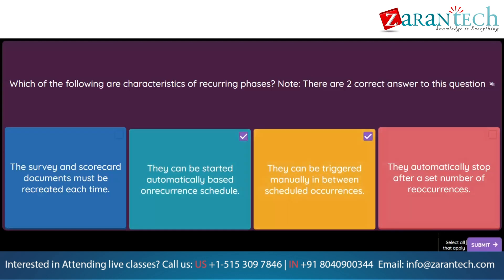Question. Which actions are available to decision makers when all assessments for a control are approved? Note, there are two correct answers. Option 1: Mark the control as effective or ineffective. Option 2: Correct erroneous information in the assessments. Option 3: Create issues related to the control. Option 4: Assign an overall grade for the assessment.